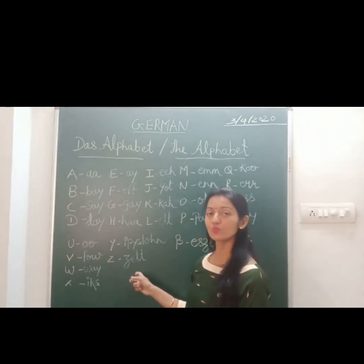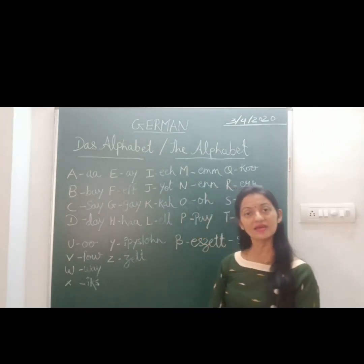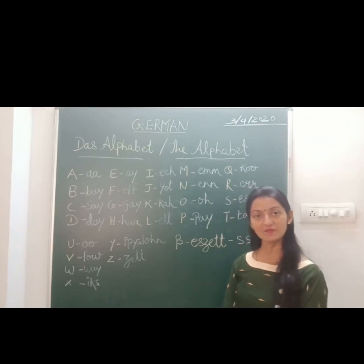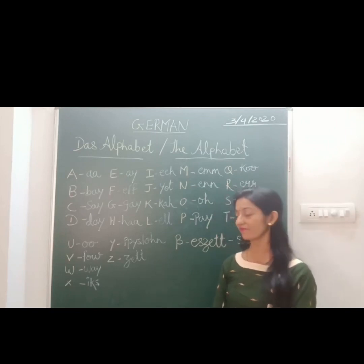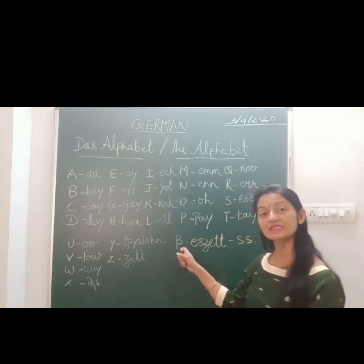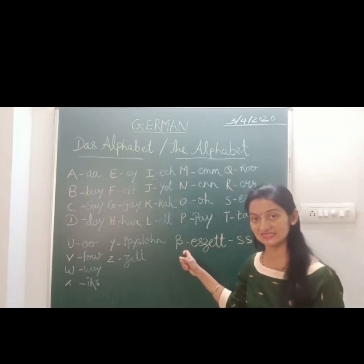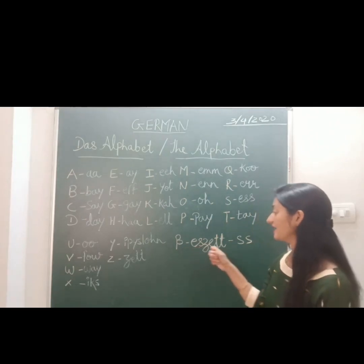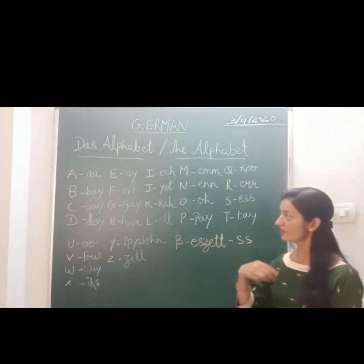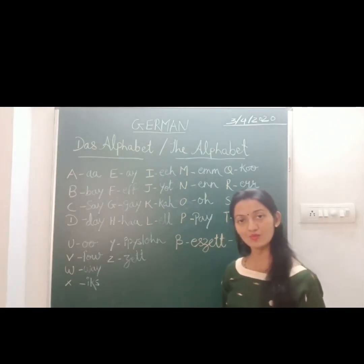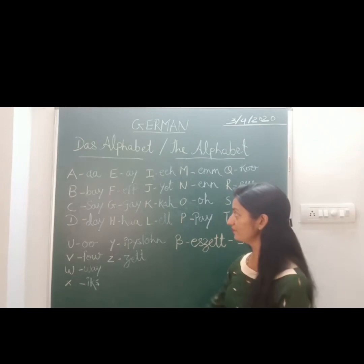And one additional alphabet we have in the German language, and that is called Eszett. Eszett means double S.